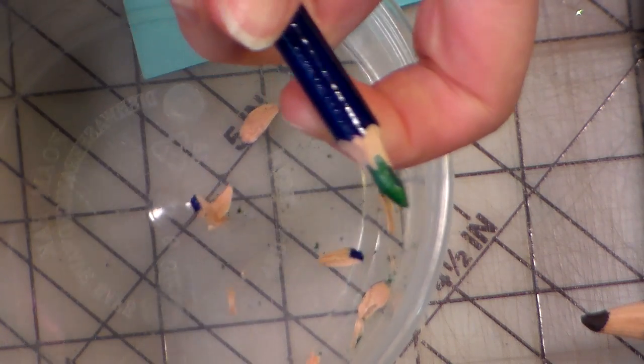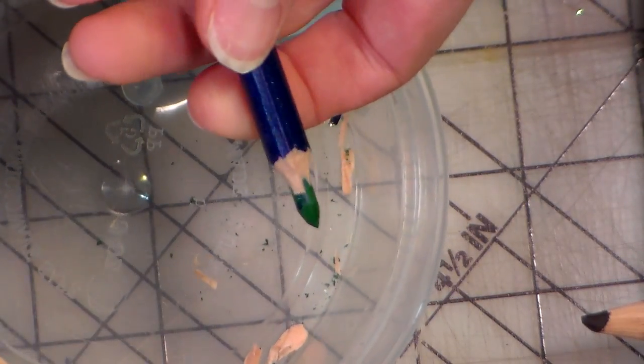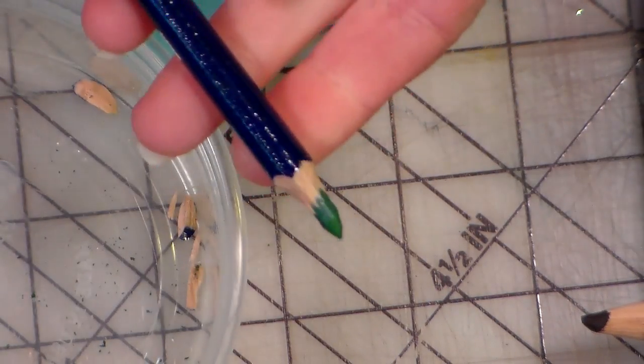So look at how much color you get and how little you waste. You can just pretty much take the wood off and keep the color intact, so it's basically like having a woodless pencil.